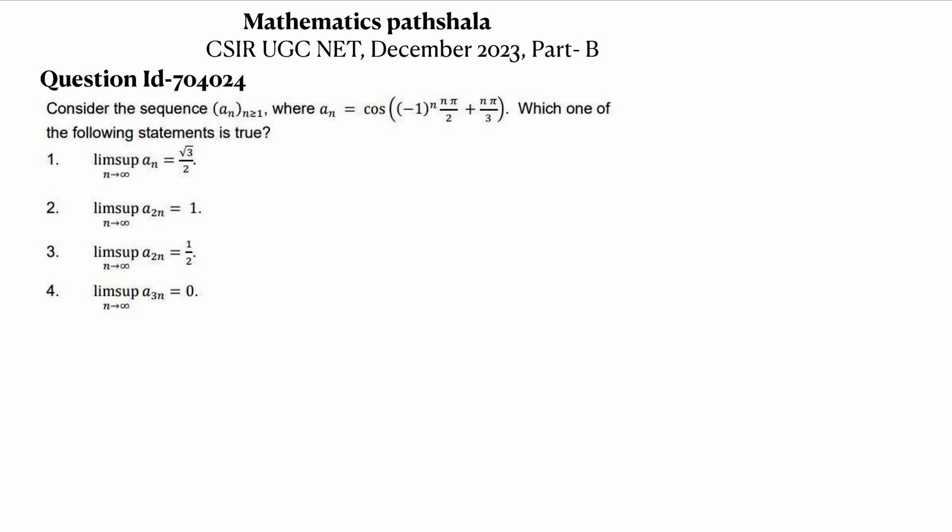First we want to check what is a_2n. Let's check: a_2n equals cos[(-1)^(2n) · 2nπ/2 + 2nπ/3]. Basically we put 2n instead of n.